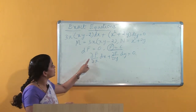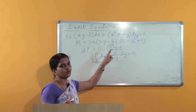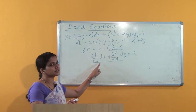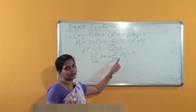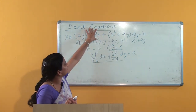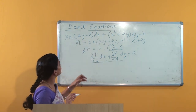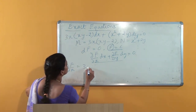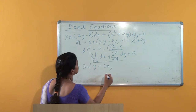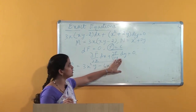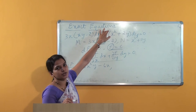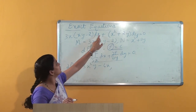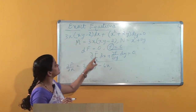By recognition of the total derivative of the two-variable function f(x, y), the total derivative is ∂f/∂x dx + ∂f/∂y dy = 0. This is nothing but the given differential equation. Comparing, what we get is ∂f/∂x = M, that is 3x²y - 6x.